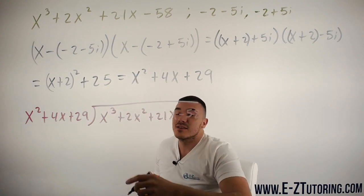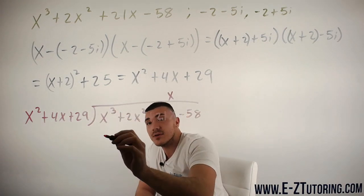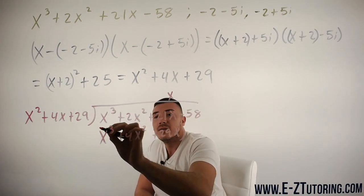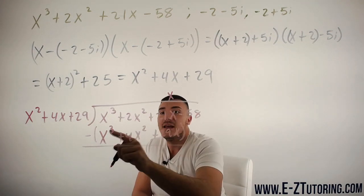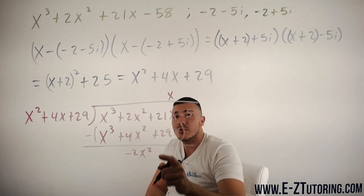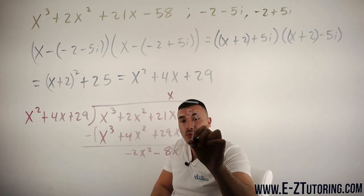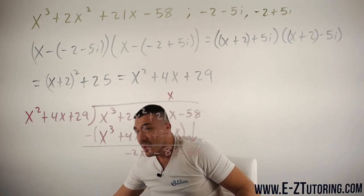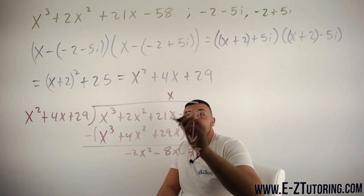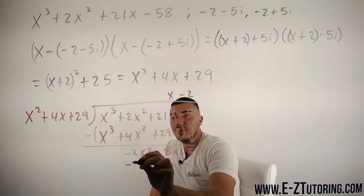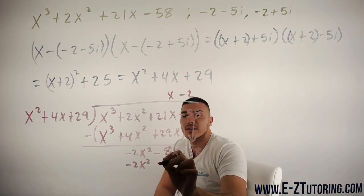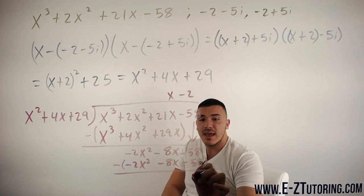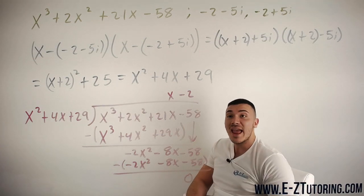So x² into x³ goes in x times. x times all that is x³+4x²+29x. Subtract all of this. 2x minus 4x² is -2x². This minus that is -8x. Bring down the -58 at supersonic speed. And then we have to see how many times does this go into here. Goes in -2 times. And then we will get -2x²-8x-58. Subtract all of this to get a remainder of 0, which means it worked out perfectly and we're done.